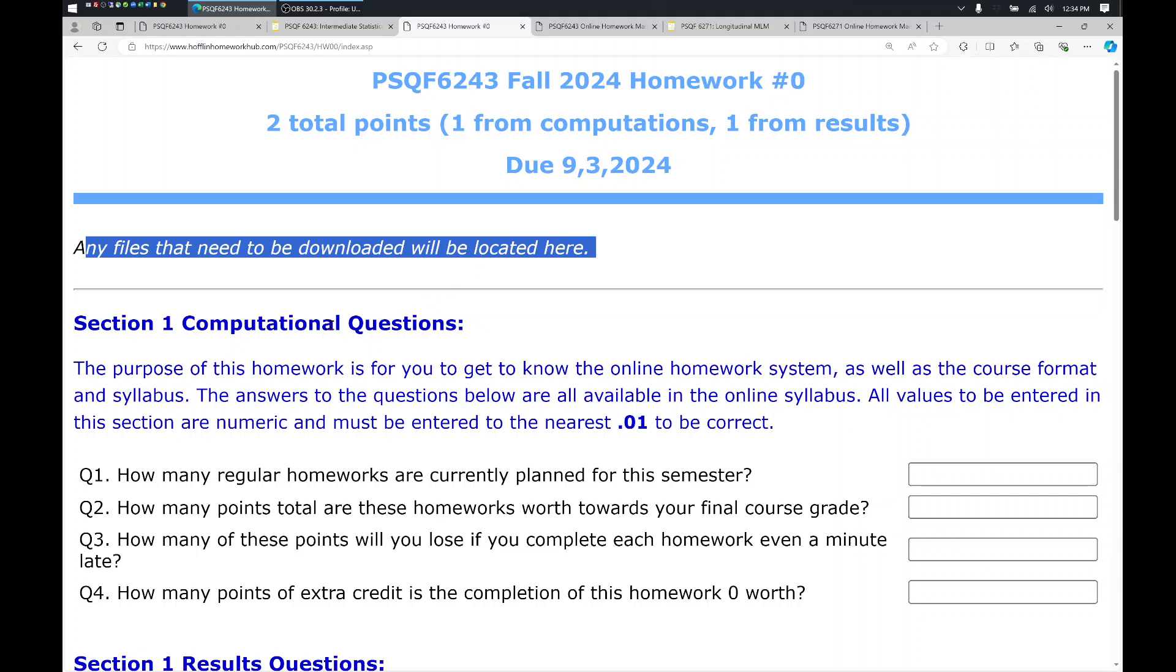So the first kind of question is what I call a computational question. These are numeric answers, and you need to enter them to the level of precision specified in the instructions. So for instance, 0.01 is commonly what I use for precision in my homeworks. The first question doesn't require that much precision. How many regular homeworks are currently planned for this semester? I'm going to deliberately answer this incorrectly so that you can see what happens. So I put my cursor over here. Let's say I enter 9.